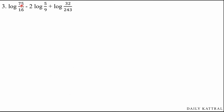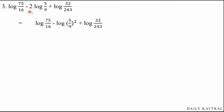Third question: log(75/16) minus 2·log(5/9) plus log(32/243). In the first step, we move the coefficient 2 to the power, using the formula n·log x equals log x to the power n. So the expression becomes: log(75/16) minus log((5/9) squared) plus log(32/243).